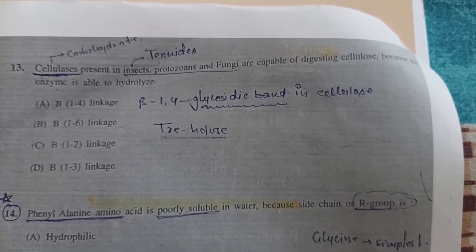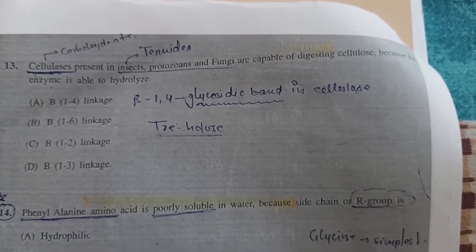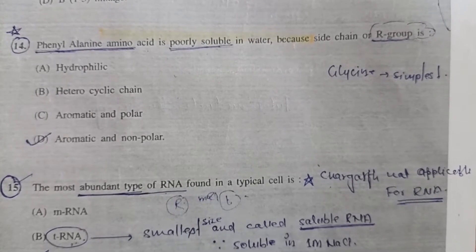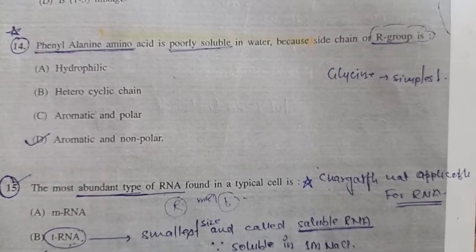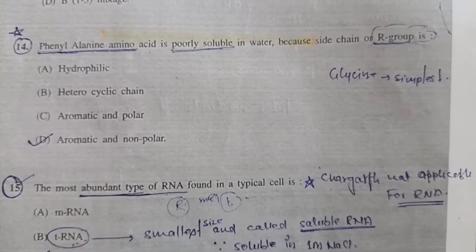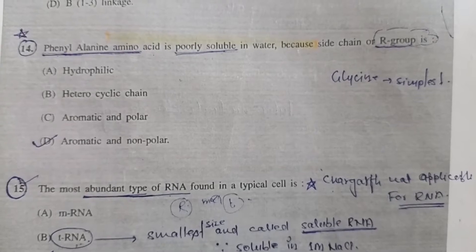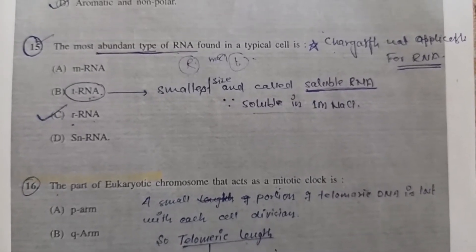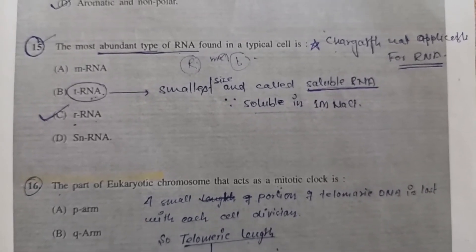Question 14: Phenylalanine amino acid is poorly soluble in water because the side chain or R group is - Option D, aromatic and non-polar. Because of non-polarity, it is poorly soluble. Question 15: The most abundant type of RNA found in a typical cell is - Option C, rRNA. And tRNA is the smallest, also known as soluble RNA.